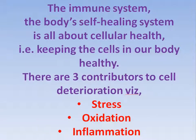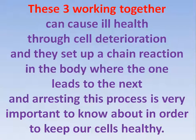The immune system, the body's cell feeding system, is all about cellular health — that is keeping the cells in our body healthy. These 3 contributors to cell deterioration, namely stress, oxidation, and inflammation, work together and can cause ill health through cell deterioration and they set up a chain reaction in the body. Whether one leads to the next and a resting process is very important to know about in order to keep our cells healthy.